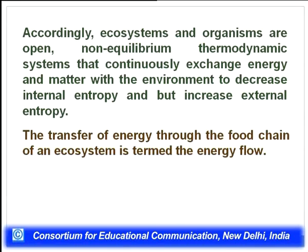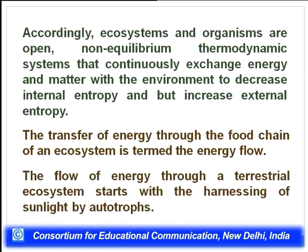The transfer of energy through the food chain of an ecosystem is termed energy flow. When energy passes from one trophic level to another, some will be dissipated and only a proportion will be transferred. The flow of energy through a terrestrial ecosystem starts with harnessing of sunlight by autotrophs — the sun is the major source of energy. Organisms near the earth's surface are irradiated by solar radiation as well as long-wave thermal radiation from nearby surfaces.